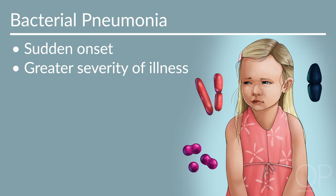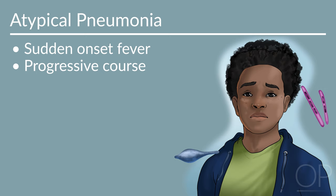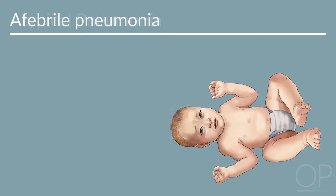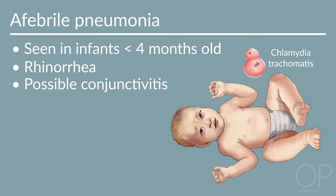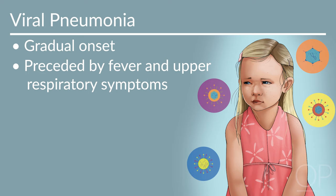The clinical presentation can help clue you in on the cause of pneumonia. Bacterial pneumonia is often sudden in onset and of greater severity. Pneumonia secondary to atypical pathogens frequently has a sudden onset fever but is typically more progressive in its course and can be associated with prolonged cough, malaise, myalgia, headache, photophobia, and sore throat. Afebrile pneumonia in infants less than 4 months of age is classically due to Chlamydia trachomatis and presents with rhinorrhea with or without conjunctivitis, staccato cough, tachypnea, and diffuse inspiratory rales without fever. Viral pneumonia classically has a gradual onset, often preceded by fever and upper respiratory symptoms such as cough, rhinorrhea, or congestion.